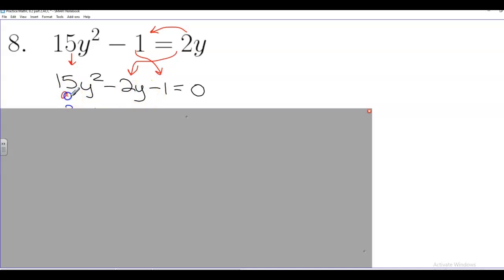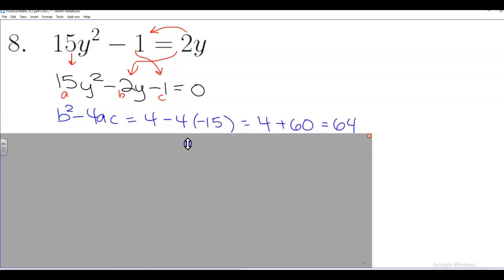So a is 15, b is negative 2, c is negative 1 when we do the quadratic formula. So the discriminant, b squared minus 4ac, so b is negative 2. So negative 2 times negative 2 is positive 4.